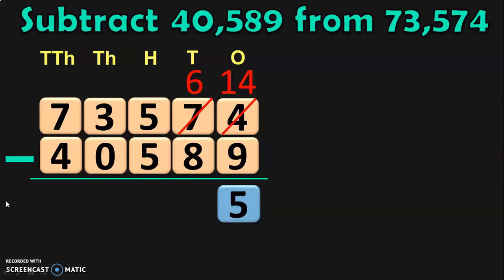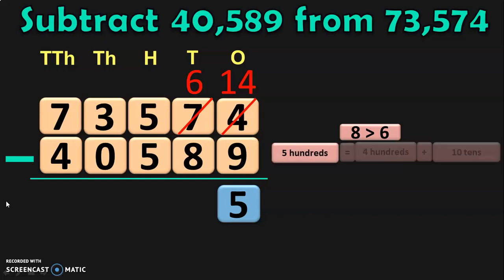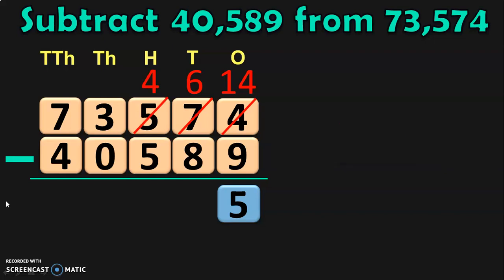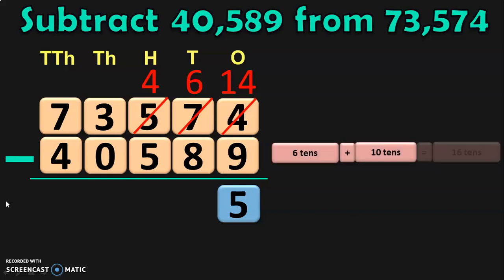Next, move to the tens place. Here again, 8 is bigger than 6, so you cannot do 6 minus 8. So, now we have to regroup the hundreds place where you have 5 hundreds, which can be written as 4 hundreds plus 10 tens. Retain the 4 hundreds in the hundreds place and take the 10 tens to the tens place. In tens place, you already have 6 tens. When you add it up with 10 tens, you get 16 tens. So, in the tens place, you have the number 16. 16 minus 8 will give you 8.